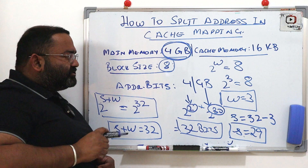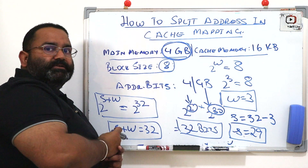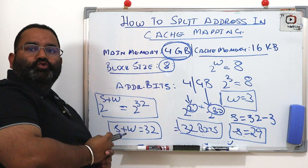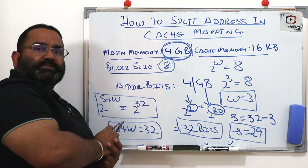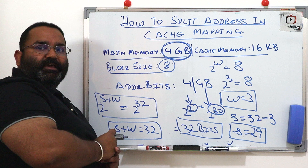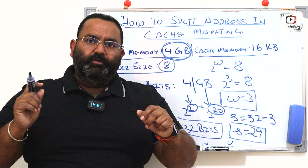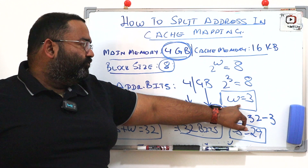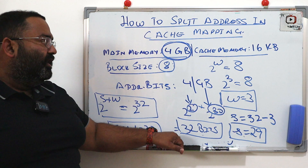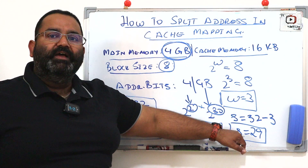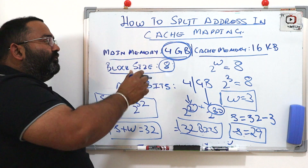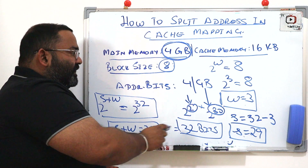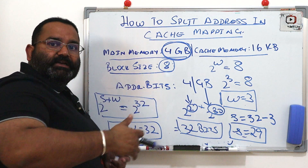To revise quickly: main memory is 4 GB, so total addresses = 4 × 2^30 = 2^32, giving us 32 address bits. Block size is 8, so 2^w = 8, meaning w = 3. Once we have total address bits = 32 and w = 3, we can easily calculate s = 29. From main memory we calculate total address bits, w, and s.